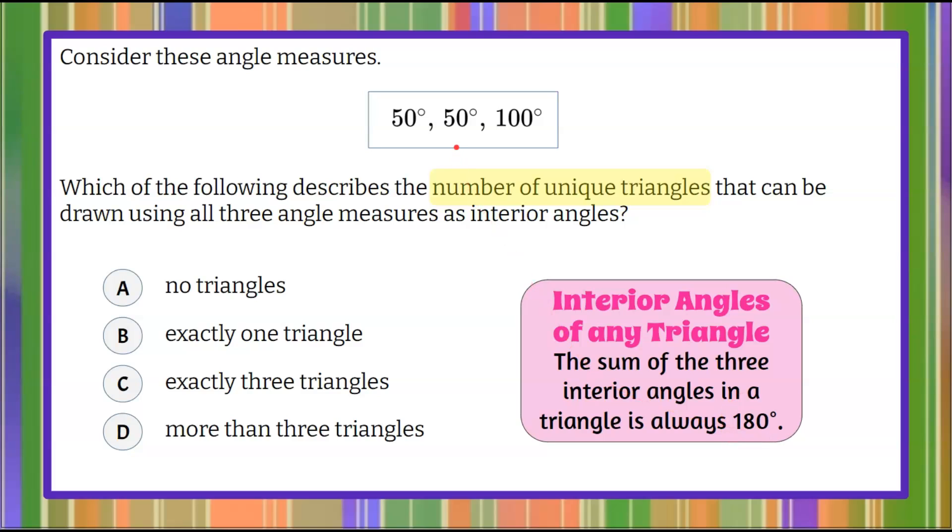Let's go up and find the sum of these three angle measures. What is 50 plus 50 plus 100? 50 plus 50 is 100, 100 plus 100 is 200.